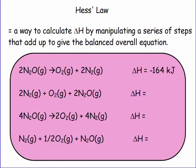Another way to calculate delta H is using Hess's law. Hess's law is a way to calculate delta H by manipulating a series of steps that add up to give the balanced overall equation. The idea behind Hess's law is that when you manipulate an equation, you're going to change the delta H.